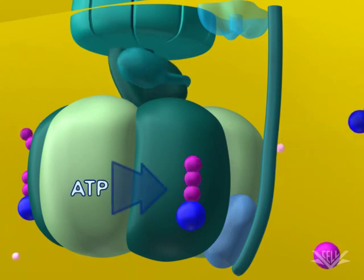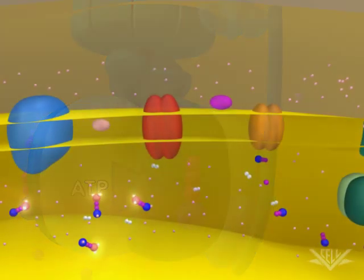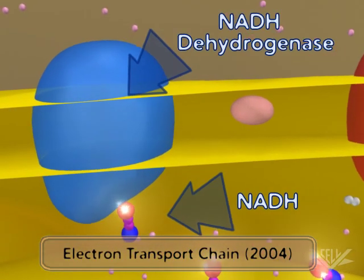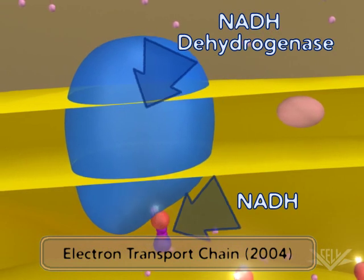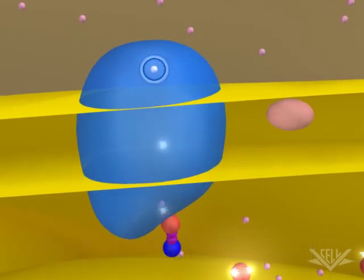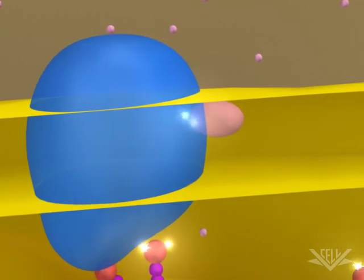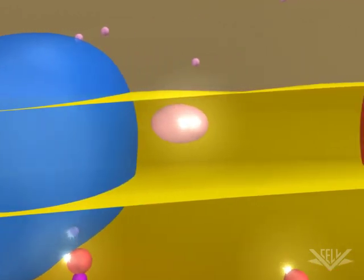This gradient is produced by the action of the electron transport system. As electrons are passed from one carrier to another in the system, protons are pumped across the membrane. This creates the gradient required for ATP production. Here, we can see the electrons moving between the carriers.